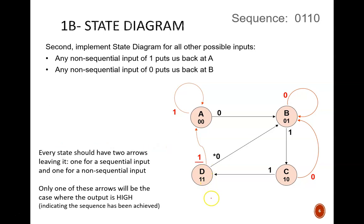As a final check, make sure that every node has two arrows leaving it, since there are only two possible inputs at a time, either 0 or 1. It is easy to forget an arrow or two, so this check is important.